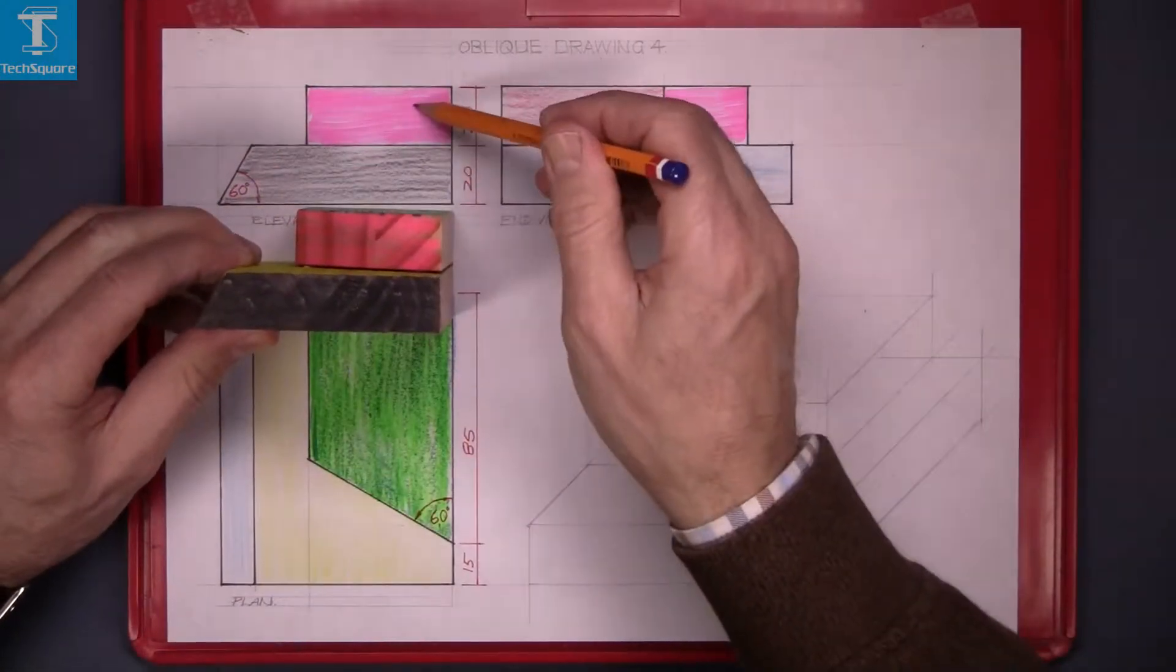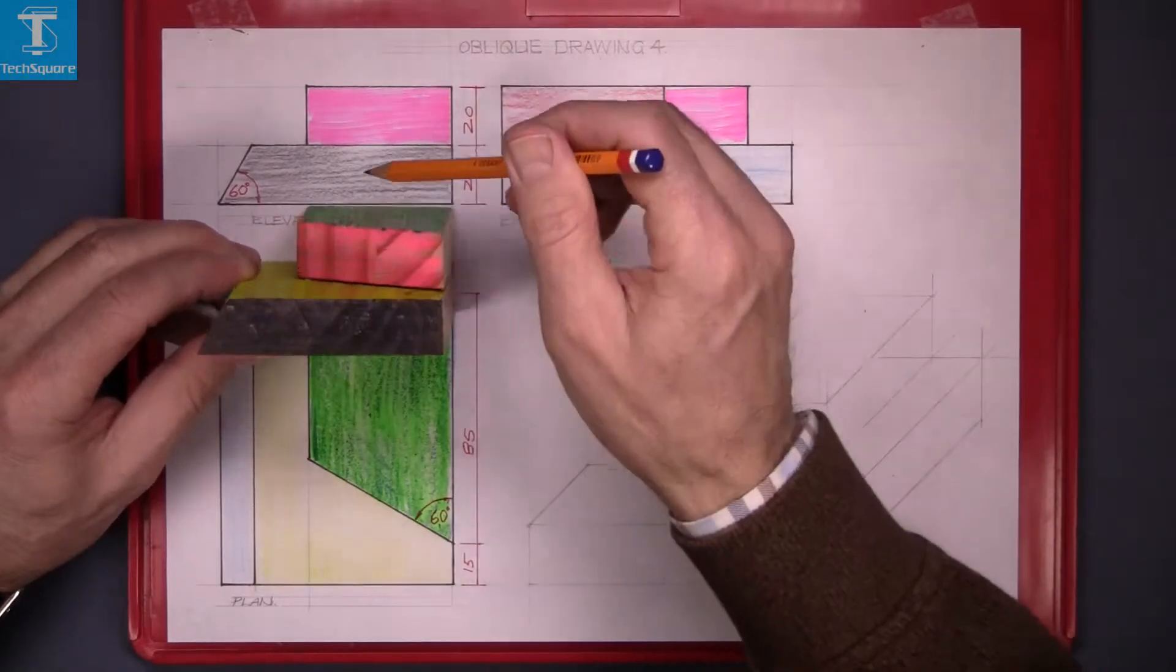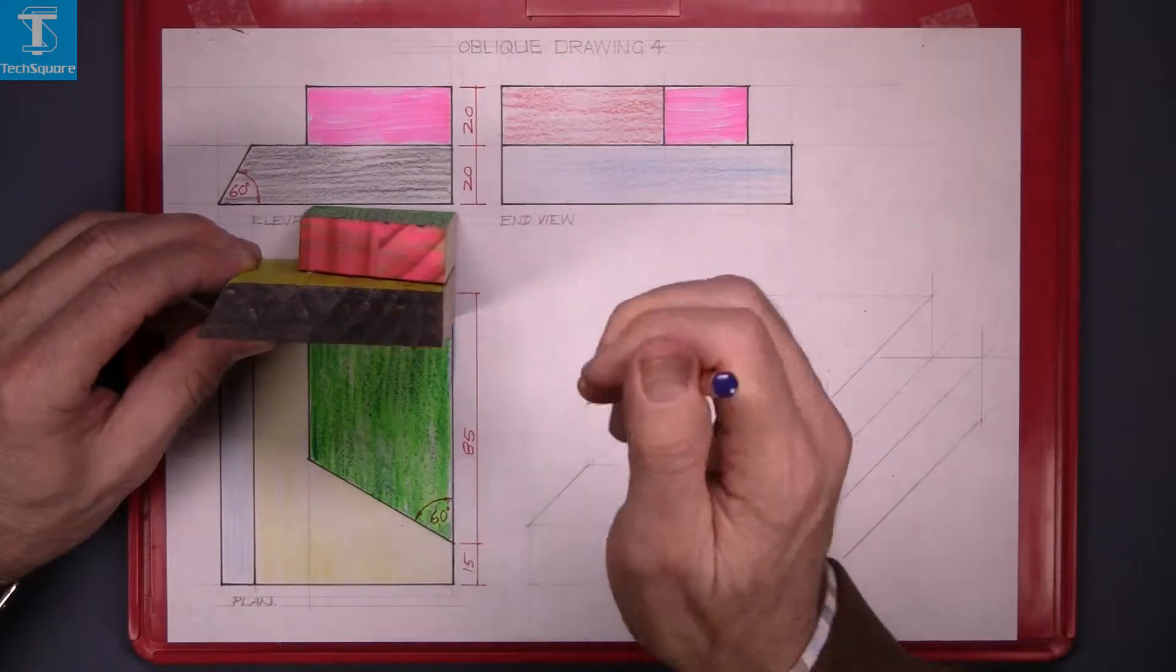The elevation that we're looking at here: the pink represents the end and the black is the bottom piece.